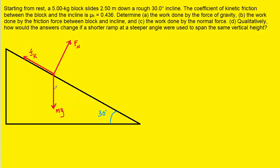Of course we have the gravitational force that's pointing straight down. We have the surface of the ramp that's pushing up on the block, and that is known as the normal force. Note that the normal force makes a 90 degree angle with the surface of the ramp. And then we have the kinetic frictional force. We have pointed that force up the ramp because as the block slides down the ramp, the friction force will tend to oppose that motion, so it's going to be pointing in the opposite direction — therefore pointing up the ramp.